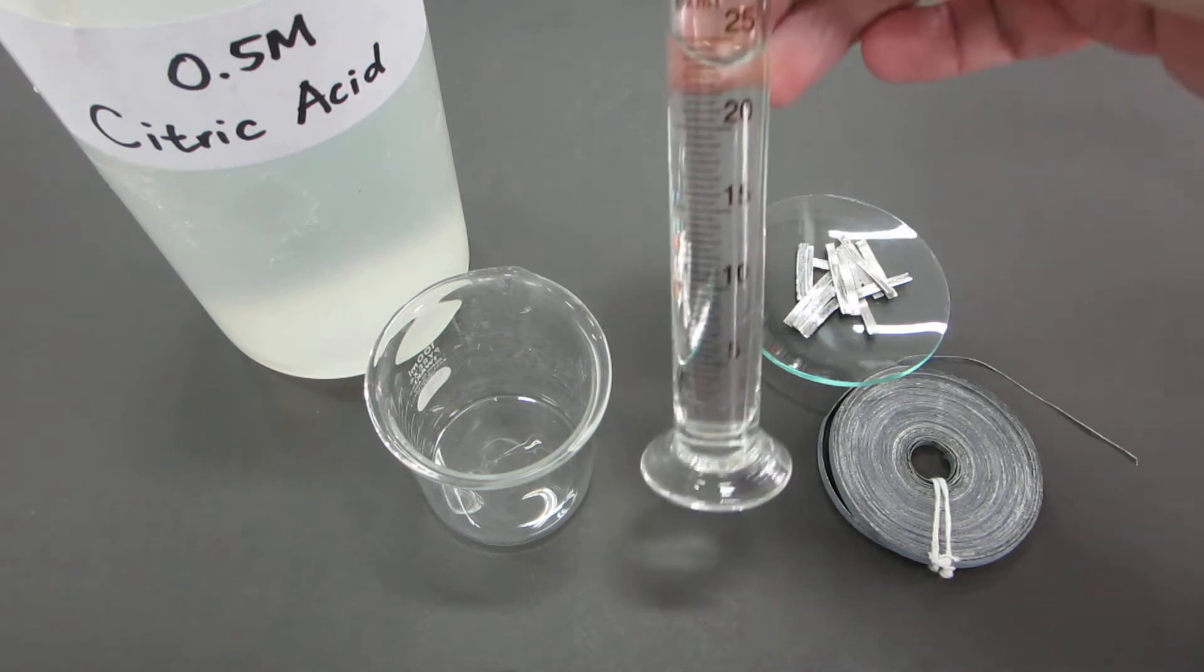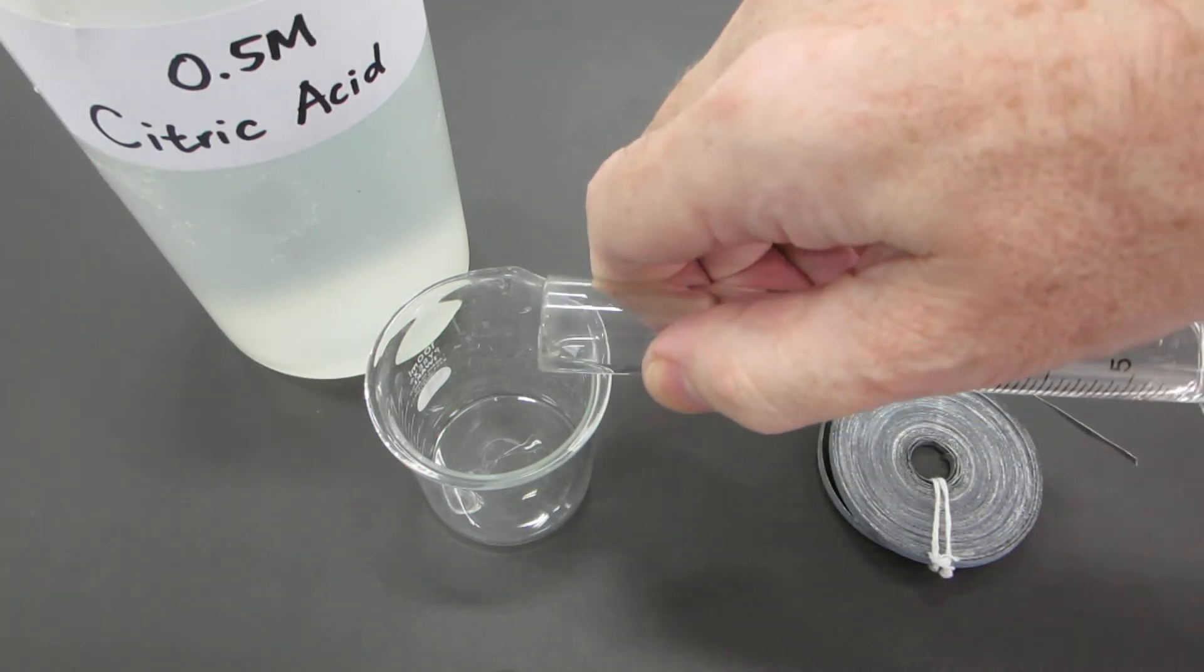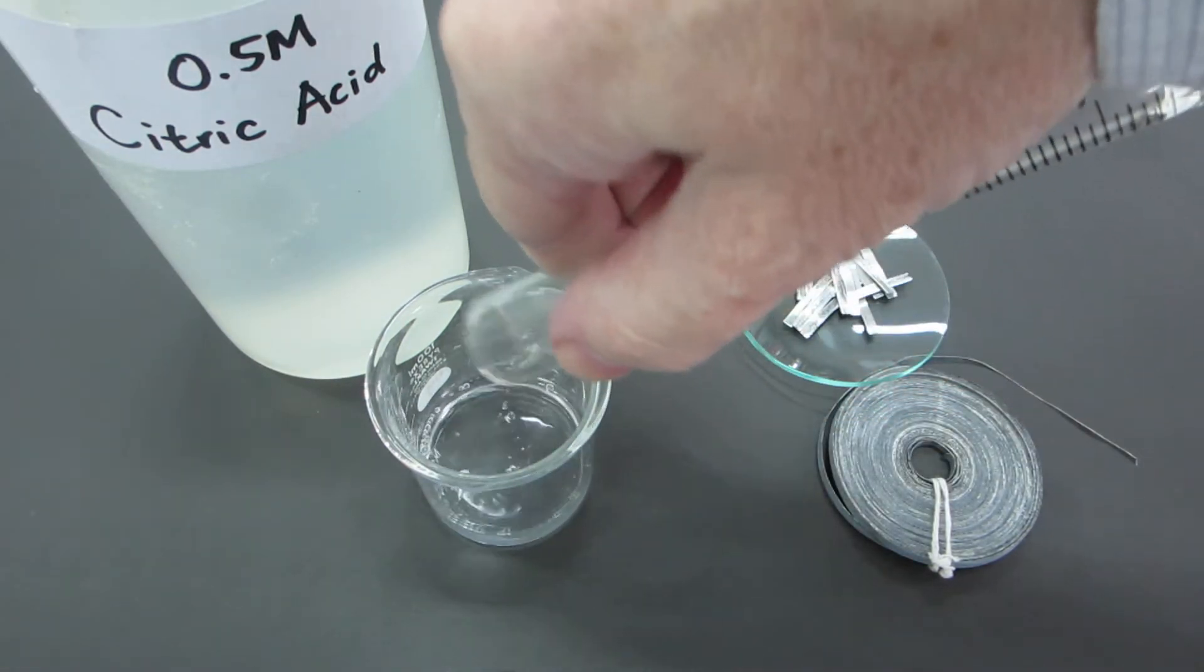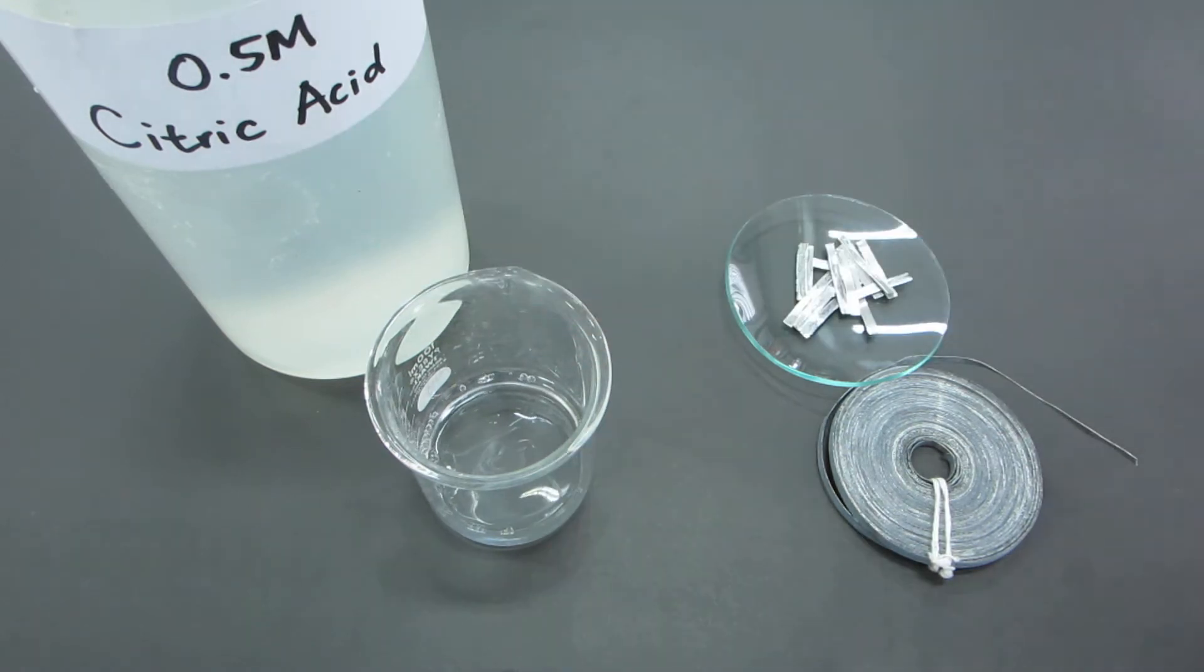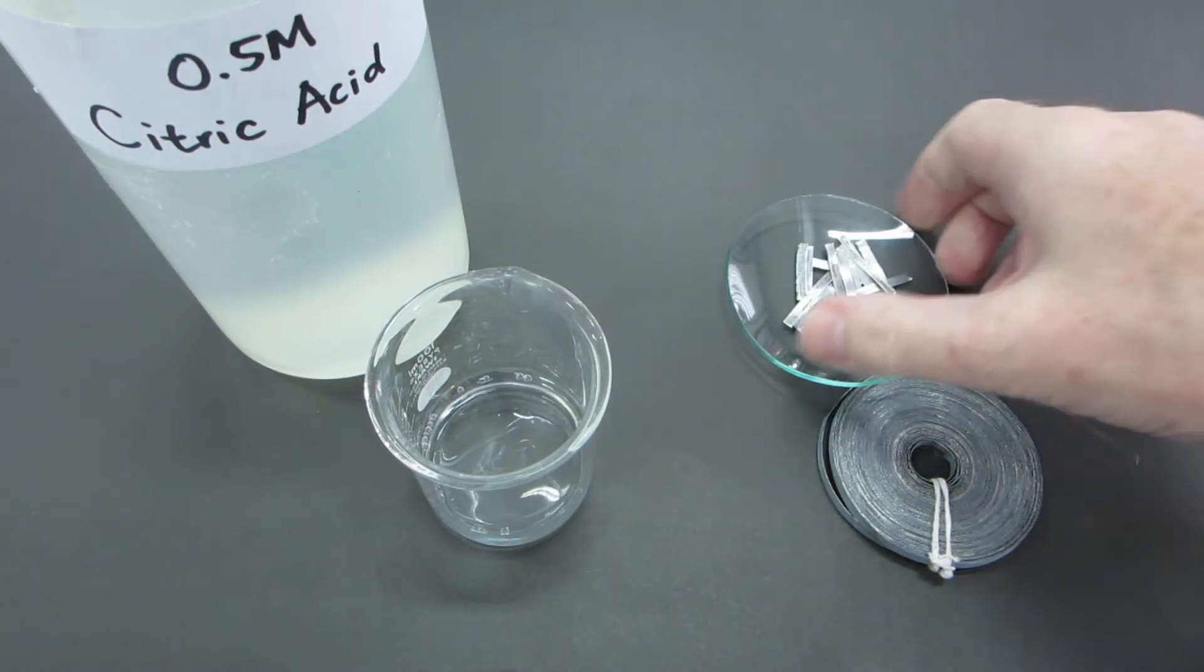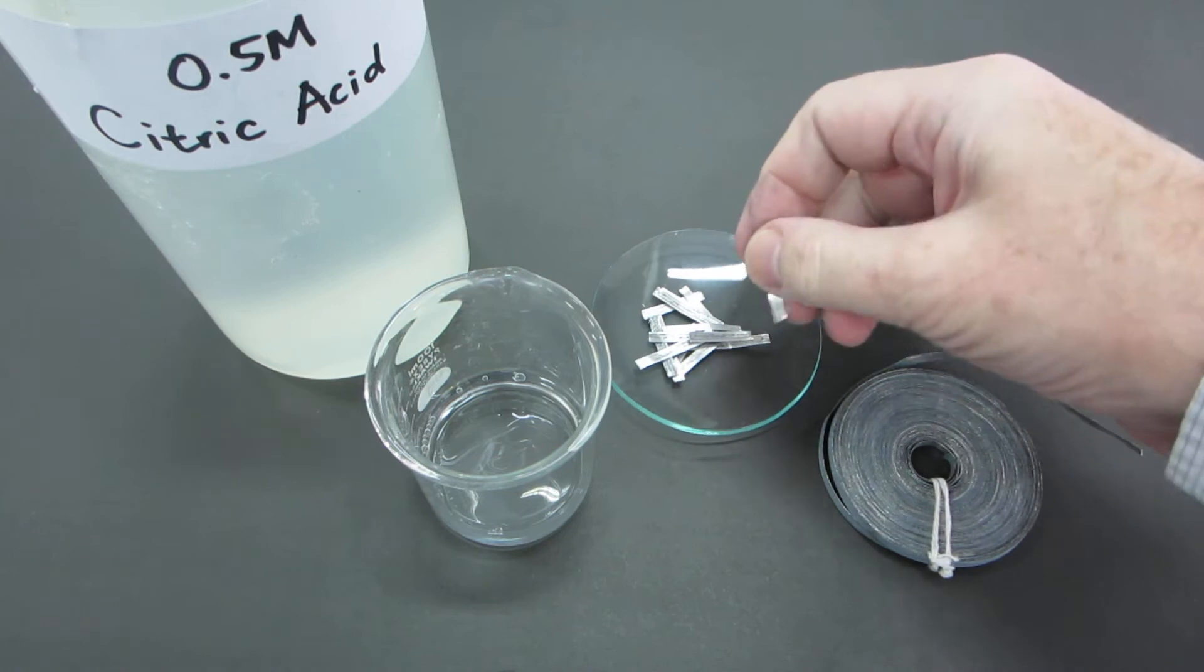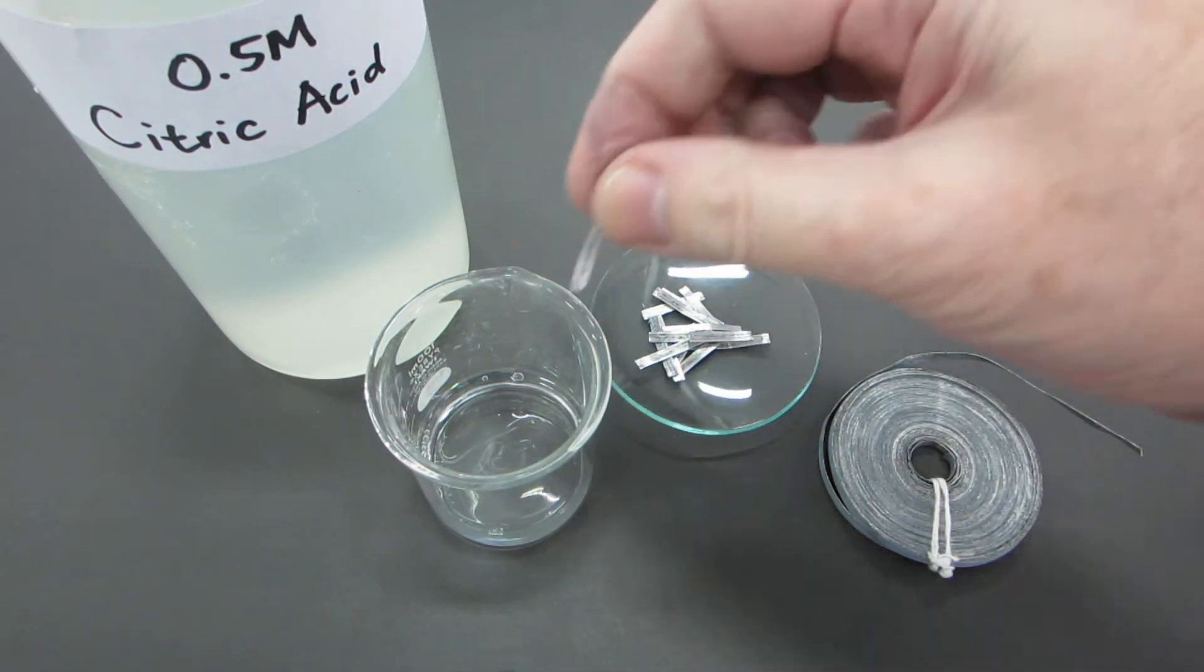Let's take 25 centimeters cubed of 0.5 molar citric acid and to it add some magnesium metal. Here in total on the watch glass we've got 0.54 grams.